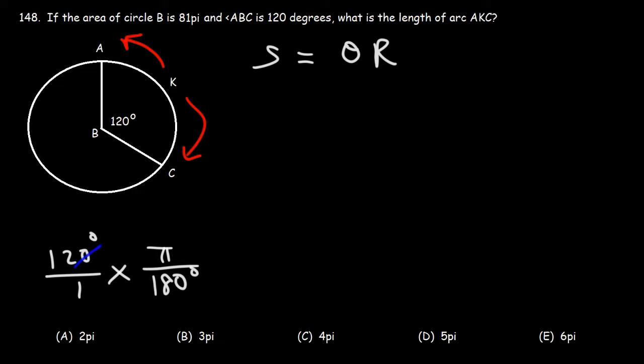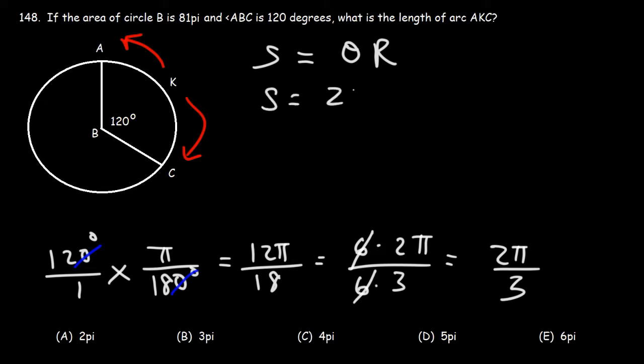So let's cancel a zero. This will give us 12 pi over 18. Now, 12 we can write as 6 times 2, and 18 is 6 times 3. And so we can cancel a 6, giving us the angle theta as 2 pi over 3. So let's replace theta with that.